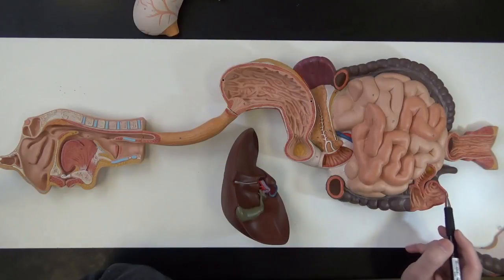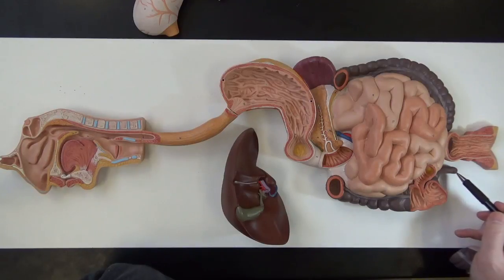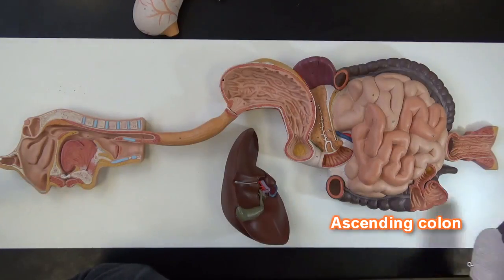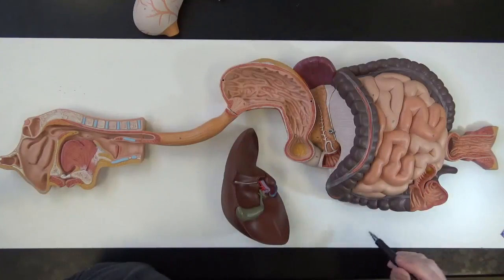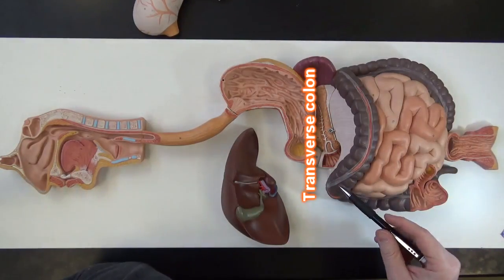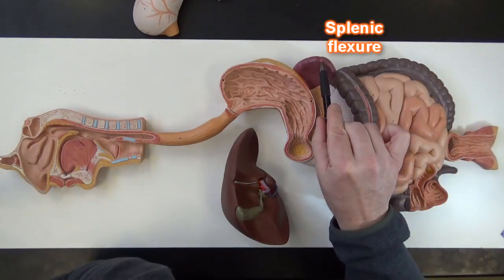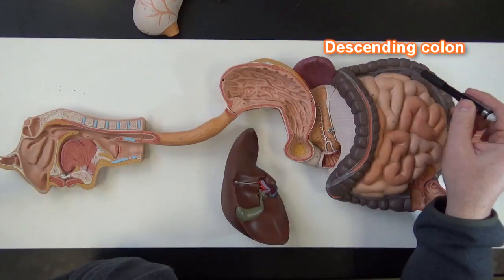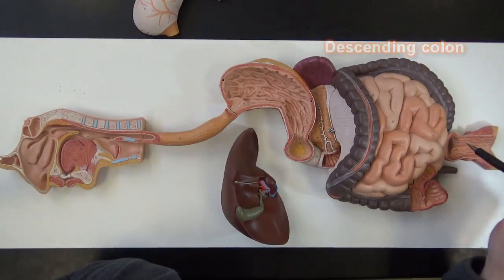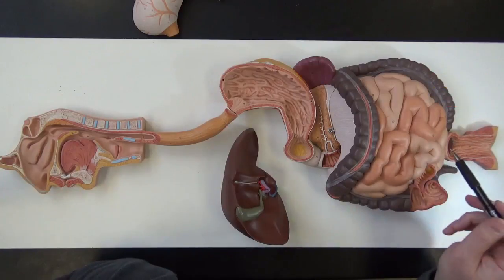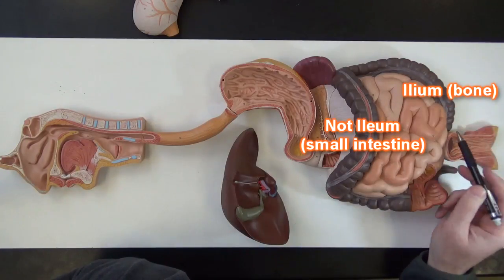This portion of the large intestine right here is the cecum, and then there's this little tube called the appendix. This part of the colon is called the ascending colon. There's a flexure known as the hepatic flexure because it's close to the liver. Then the transverse colon goes over to the splenic flexure — here's the spleen. Then down the descending colon, and then we get an S-shaped turn called the sigmoid colon, where this part of the large intestine goes around the ilium, the hip bone.